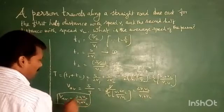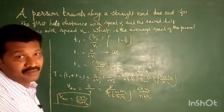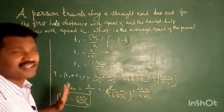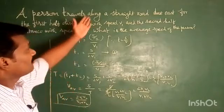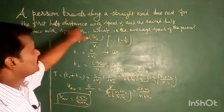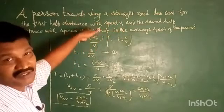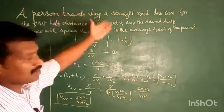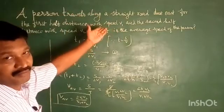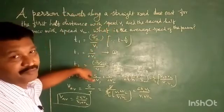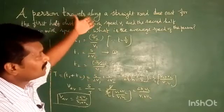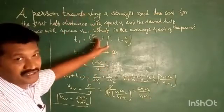So average speed v_av is equal to 2 v1 v2 by v1 plus v2. For half distance, the speed is v1 and for the other half it's v2. For example, we can calculate average speed. Based on the problem, this concept, this is the formula based on theory.